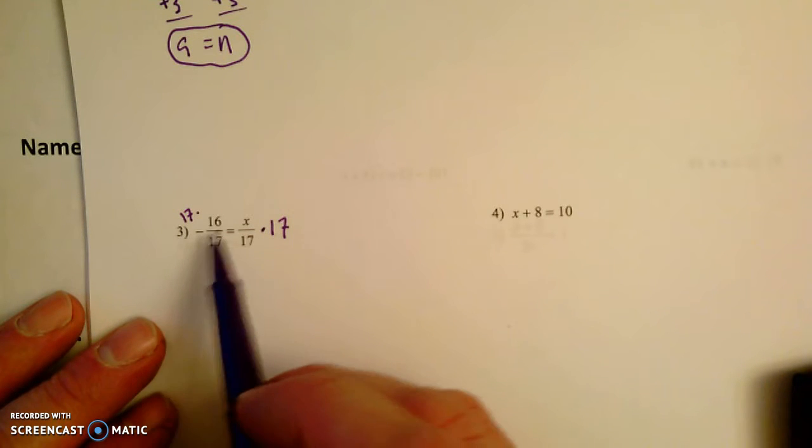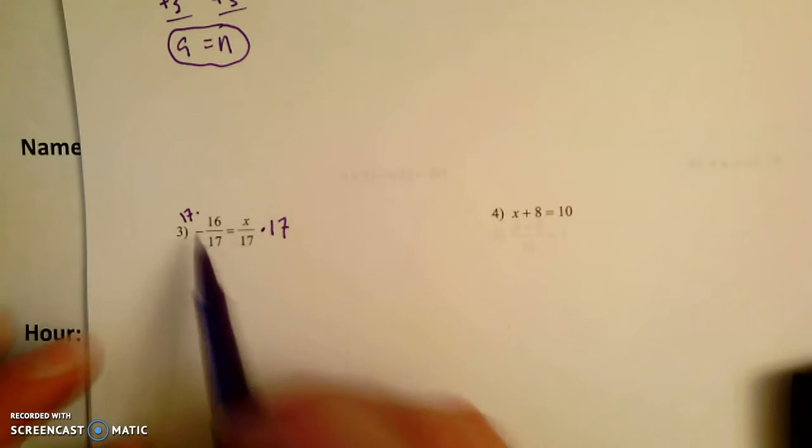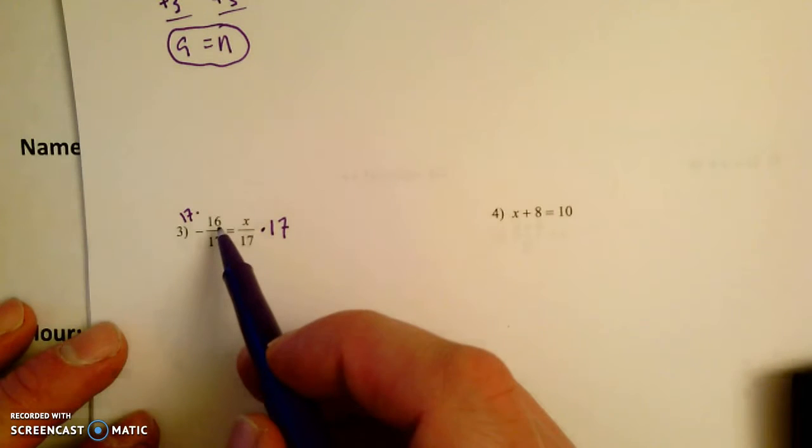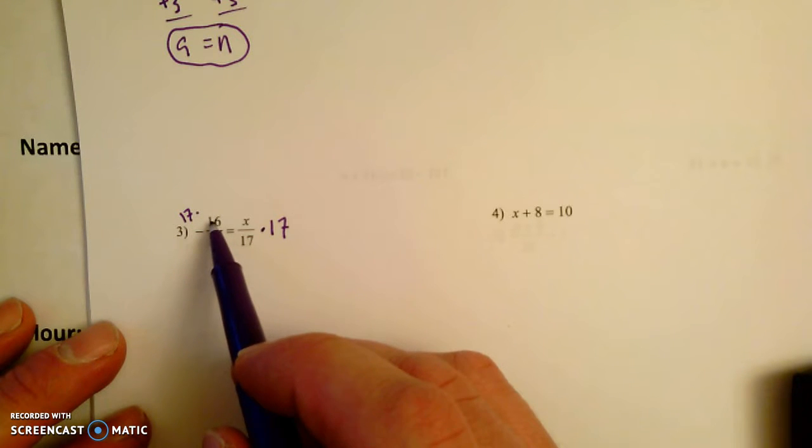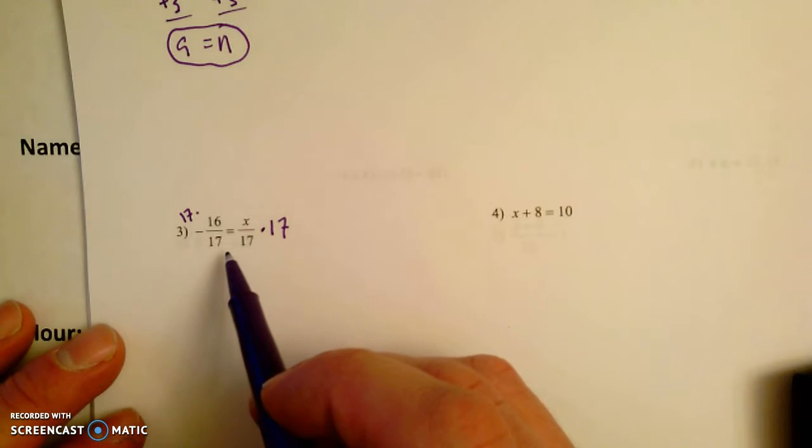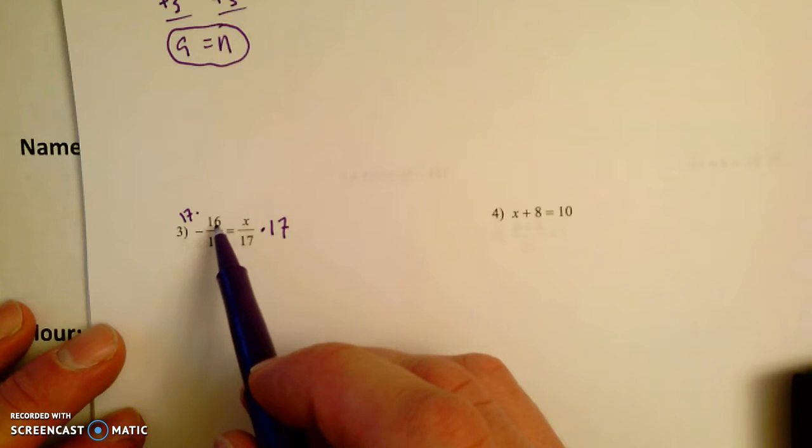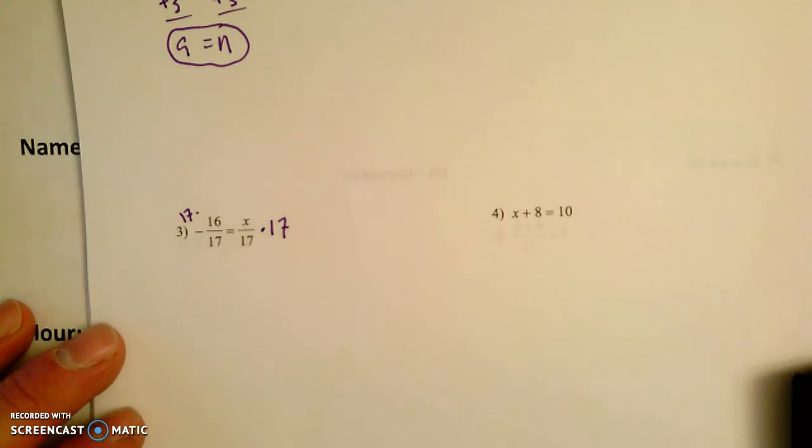When you multiply a fraction by a whole number, you just multiply the numerator by the whole number. Remember the numerator tells you how many pieces you have. The denominator tells you the size of the pieces. And here, when we multiply the number of pieces we have, we increase the number of pieces, but we don't change their size. So it's 16 pieces, 1/17th each. When we multiply by 17, we're just increasing the number of pieces.